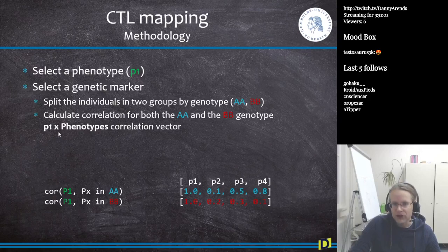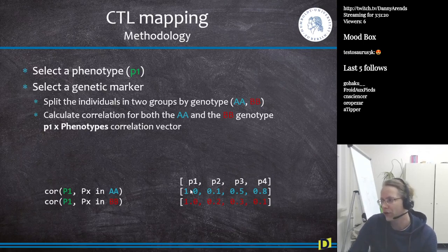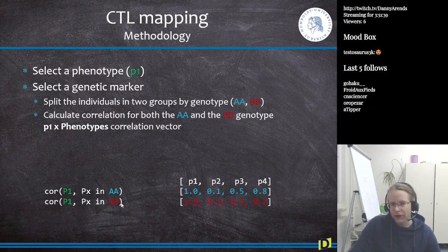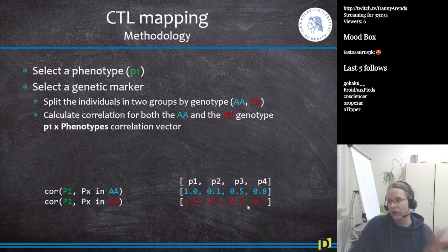Then you calculate the correlation for both the AA and BB genotype. What you do is P1 times all of the phenotype correlation vector — you calculate the correlation of P1 with the phenotypes which are showing AA. You get a vector: phenotype 1 of course shows a correlation of 1 to phenotype 1, because two things which are equal always have a correlation of 1. P1 and P2 at this marker show 0.1 correlation, P1 and P3 show 0.5, and P4 shows 0.8. So here P1 and P4 are highly correlated at this marker. You do the same thing for the BB individuals — again getting a vector with four correlation coefficients.